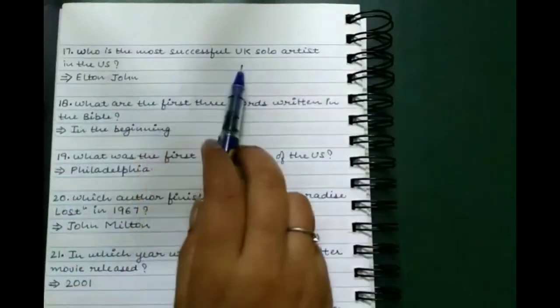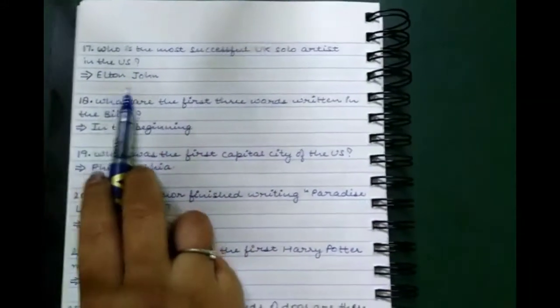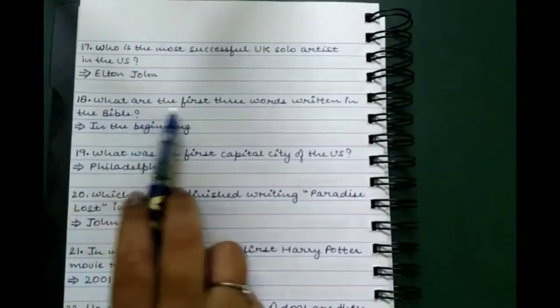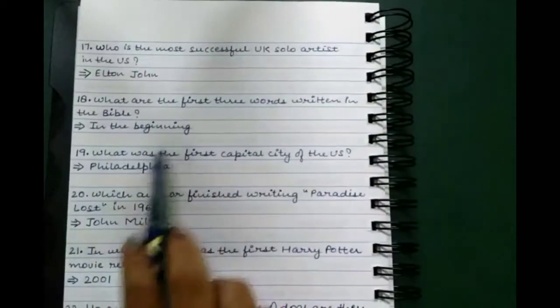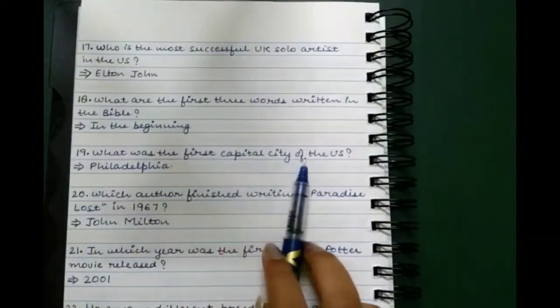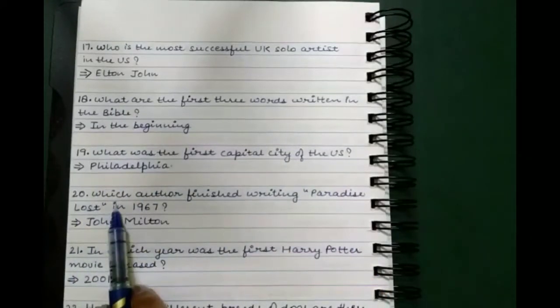When was the fast food chain McDonald's founded? 1995. Which is the largest country based on surface area? Russia. Who is the most successful UK solo artist in the U.S.? Elton John.